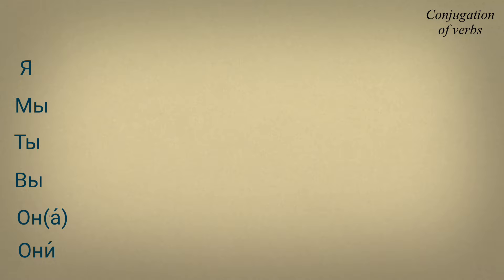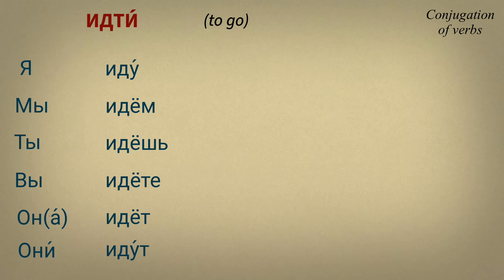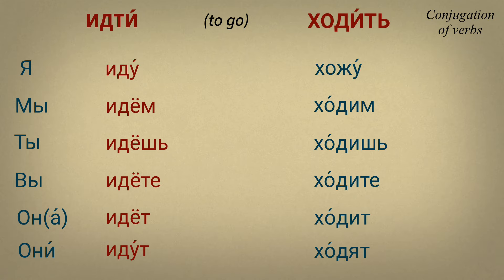At the end of the lesson, here is a conjugation table for the verbs mentioned. Идти: я иду, мы идём, ты идёшь, вы идёте, он/она идёт, они идут. Ходить: я хожу, мы ходим, ты ходишь, вы ходите, он/она ходит, они ходят.